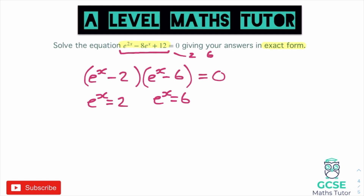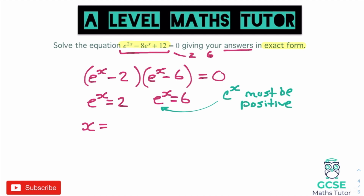Before solving, note that e to the power of x must always be positive — if we got e^x equals a negative number we would discard that answer. Here both 2 and 6 are positive, so both are valid solutions. Taking the natural log of both sides gives x equals the natural log of 2, and x equals the natural log of 6. Both are in exact form.